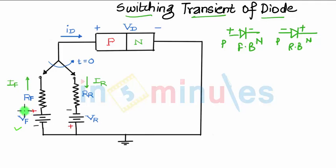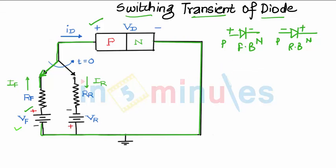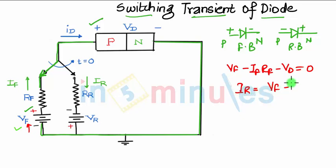Looking at the diagram, the positive Vf is connected to the positive P-N terminal. When the switch is connected, we do a time analysis. Applying KVL around the circuit, the equation is: Vf minus If times Rf minus the voltage across the diode equals zero. So we can write If equals (Vf minus Vd) divided by Rf. Since the current is the same in series, the forward bias current If and the diode current Id are the same.